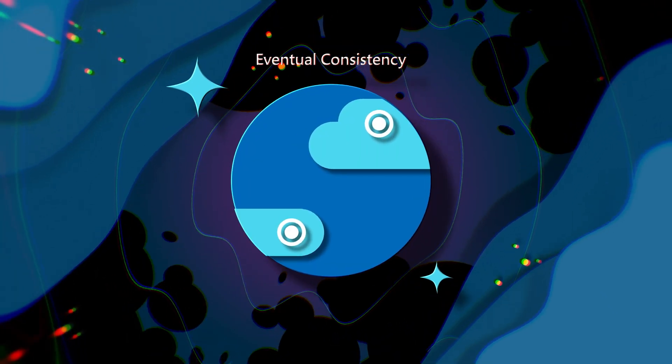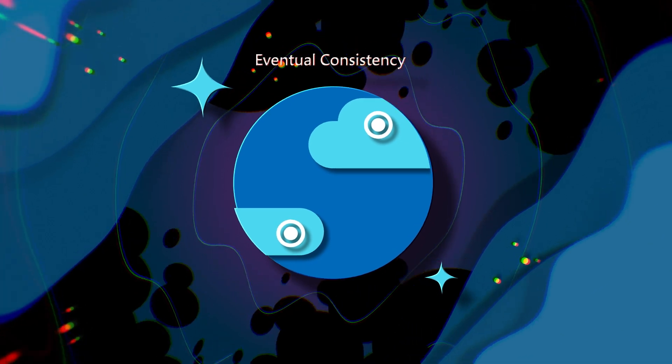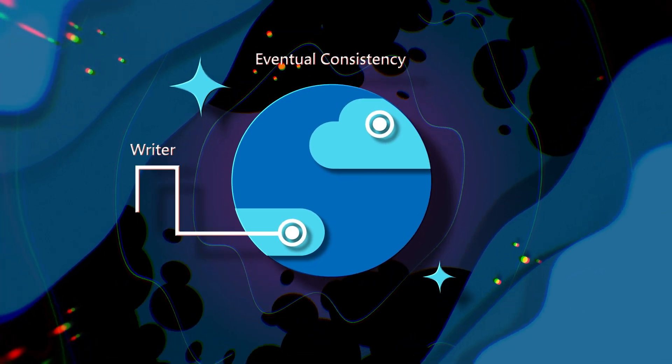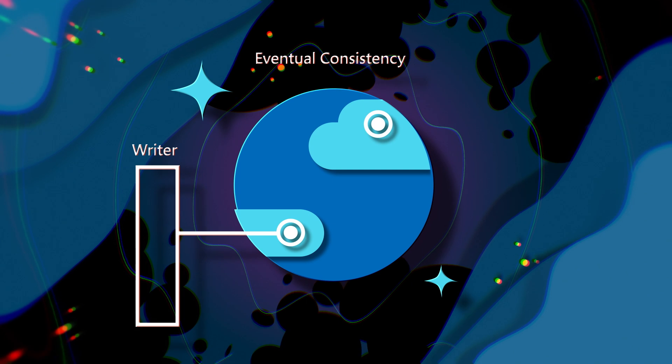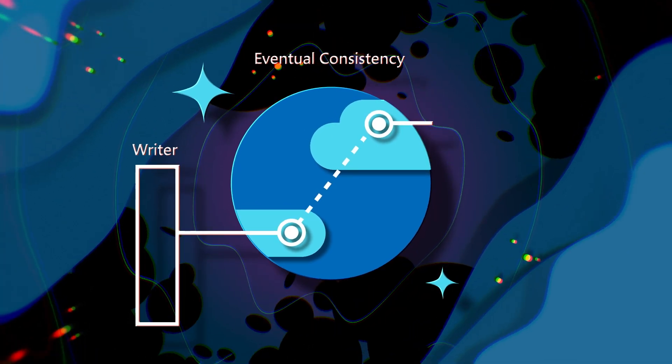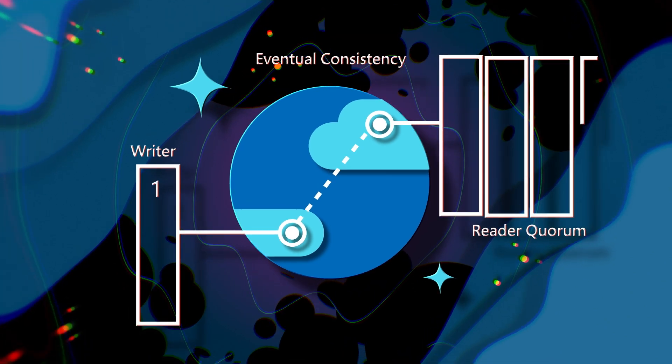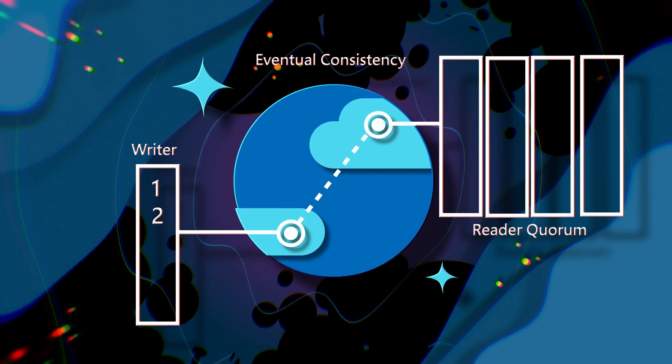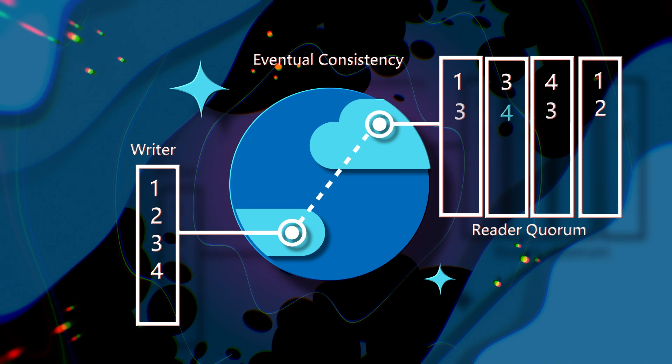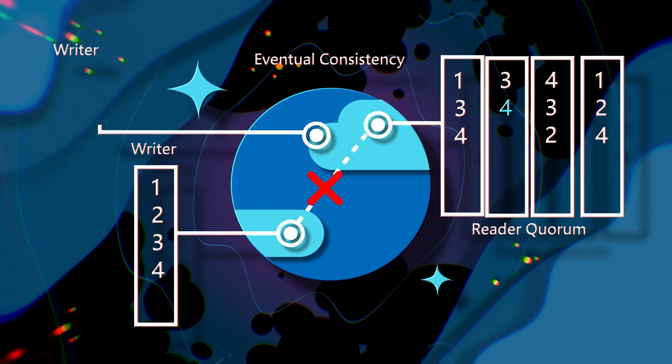The first and weakest consistency model is eventual consistency. With eventual consistency, there are zero guarantees around when or in what order our data will be replicated. Because there is no consistency guarantee, eventual consistency provides the lowest latency and the highest throughput of all the consistency models.